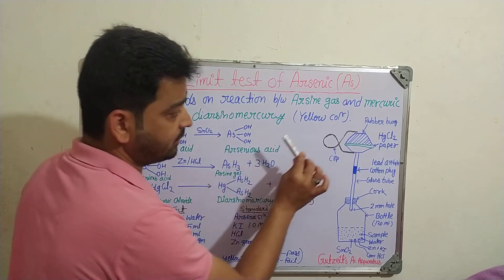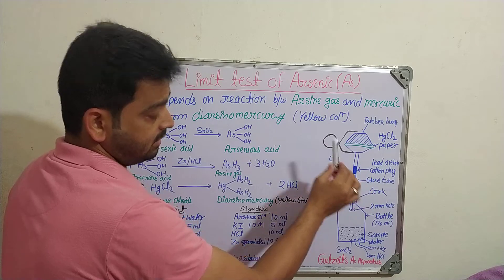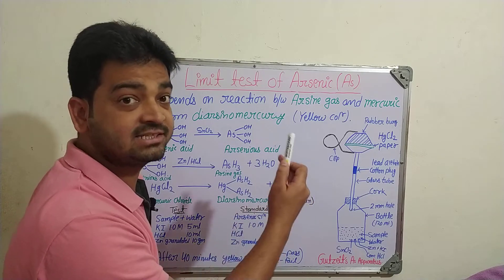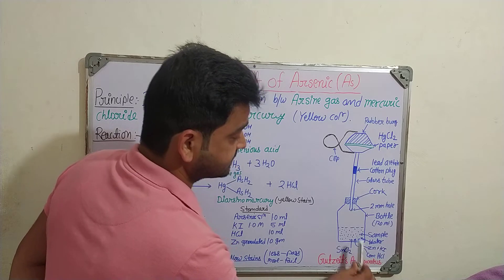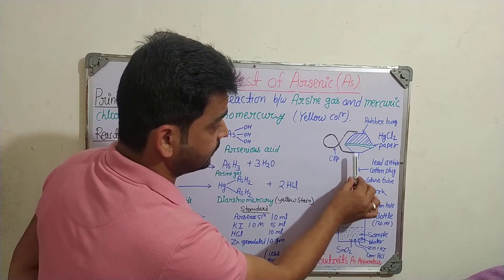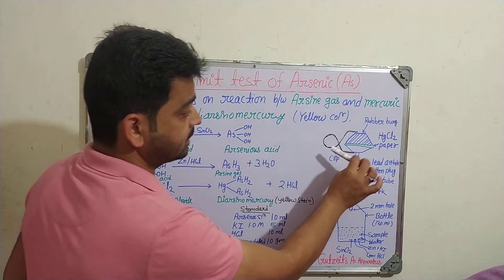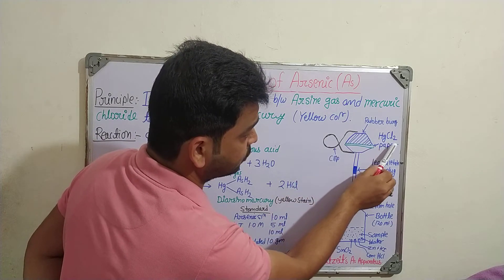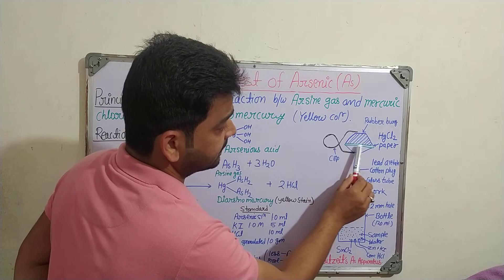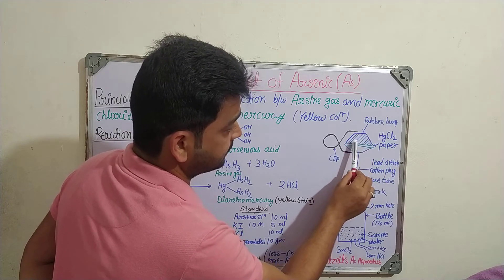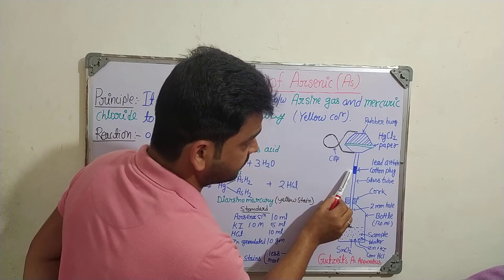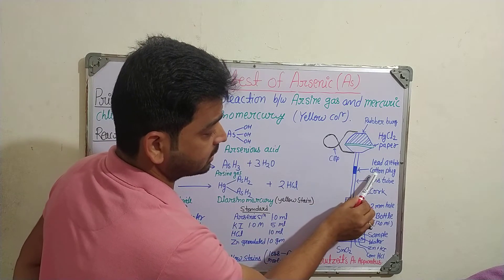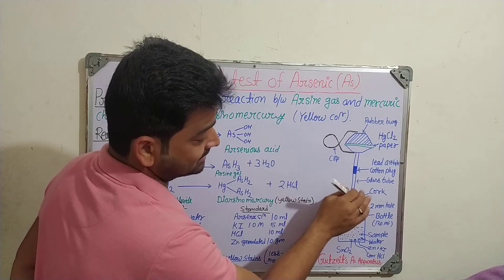Before going to the reaction, I will try to explain this apparatus, which is totally new compared to the previous limit tests we have studied, where we used Nessler cylinders. Here, we are going to use the Gutzeit arsenic apparatus. There will be one bottle with a glass pipe, and there will be another paper setup. Here, from the starting, this is the mercury chloride paper — this green color — which will be packed with a rubber bung and a clip. And this is also important: coming after this is the lead acetate cotton plug.